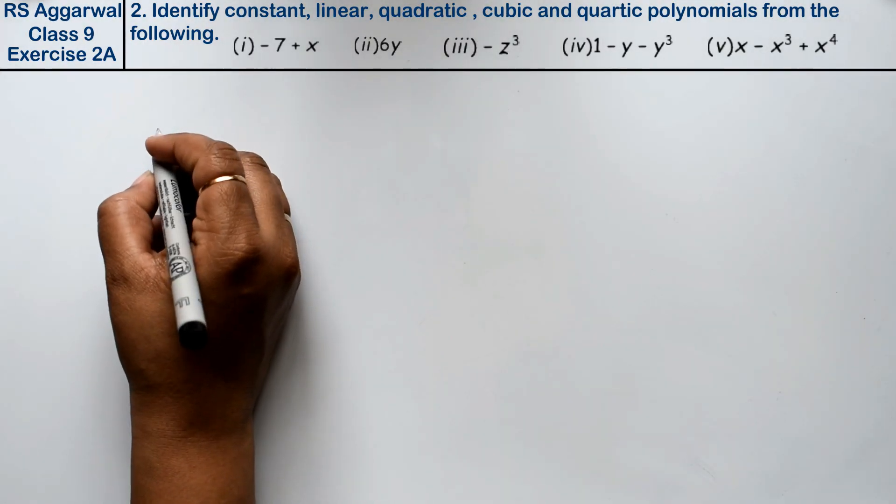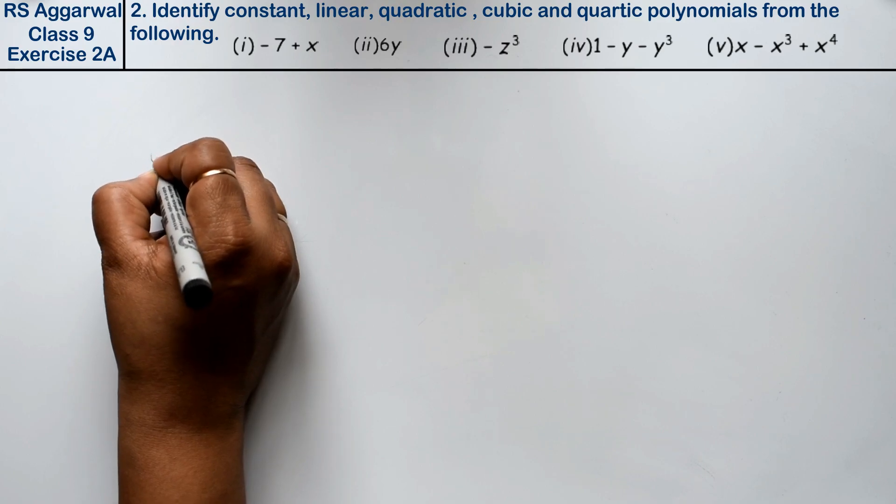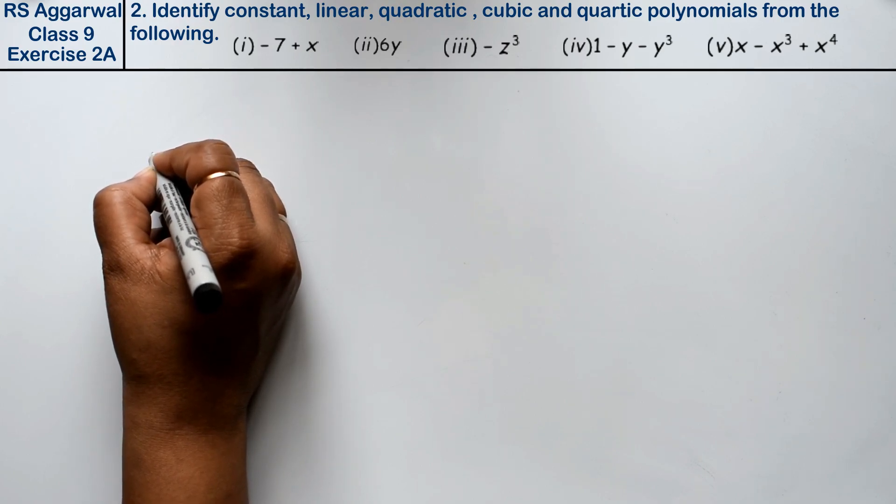Let's do question number 2 of exercise 2A, that is polynomial. Question number 2 is identify constant, linear, quadratic, cubic and quartic polynomial from the following.